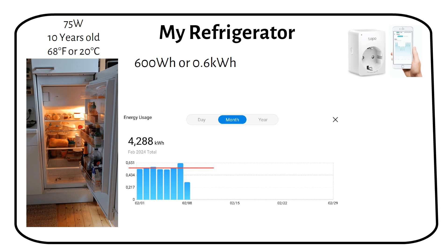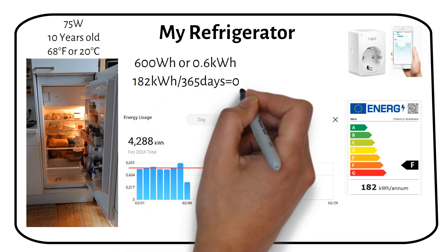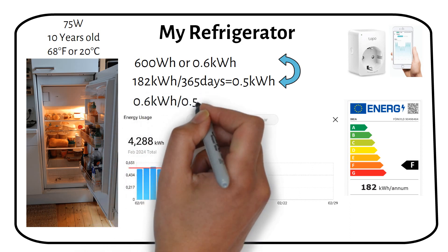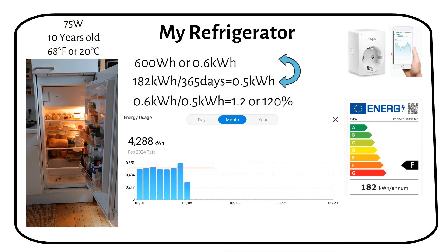The manufacturer states that the fridge consumes 182 kilowatt hours per year. If we divide this by the number of days in a year, we get a daily consumption of 500 watt hours or 0.5 kilowatt hours. This is slightly less than our practical test results. To determine the energy consumption of your own fridge, you can multiply its annual consumption by 120%. This is 1.2 times the daily consumption.